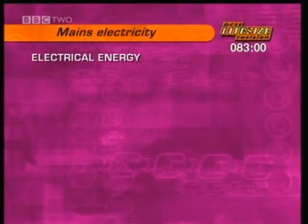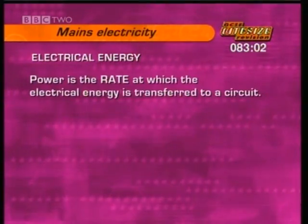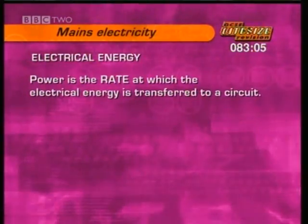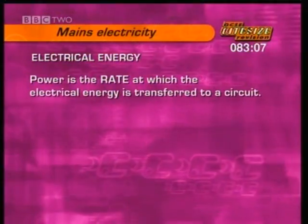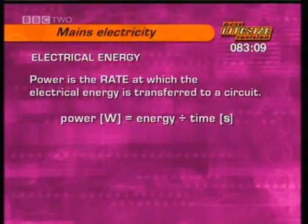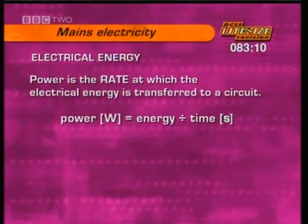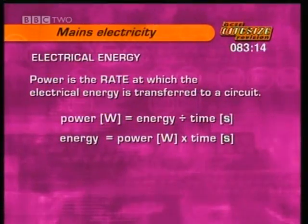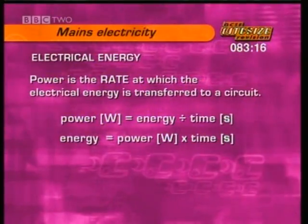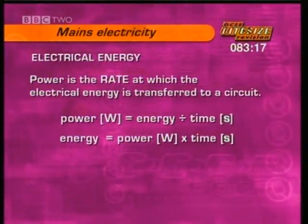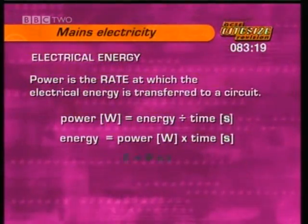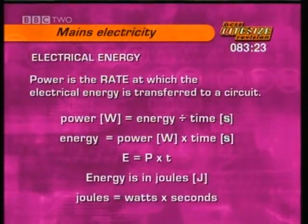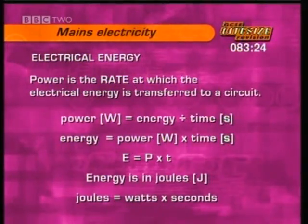Here's another useful formula. Power is the rate at which electrical energy is transferred to a circuit, so power equals energy divided by time. Put another way, energy equals power multiplied by the time in seconds — that's E equals P times T. The unit of energy is joules.